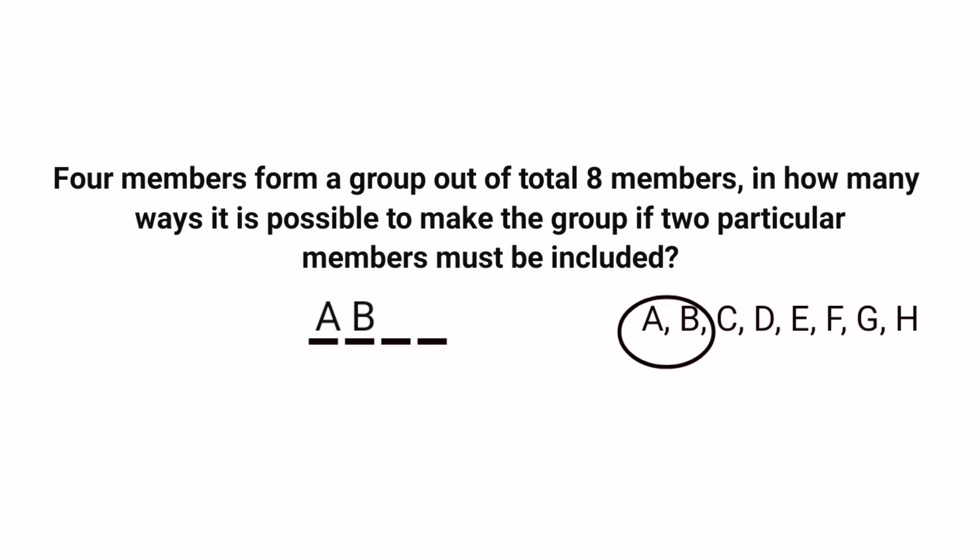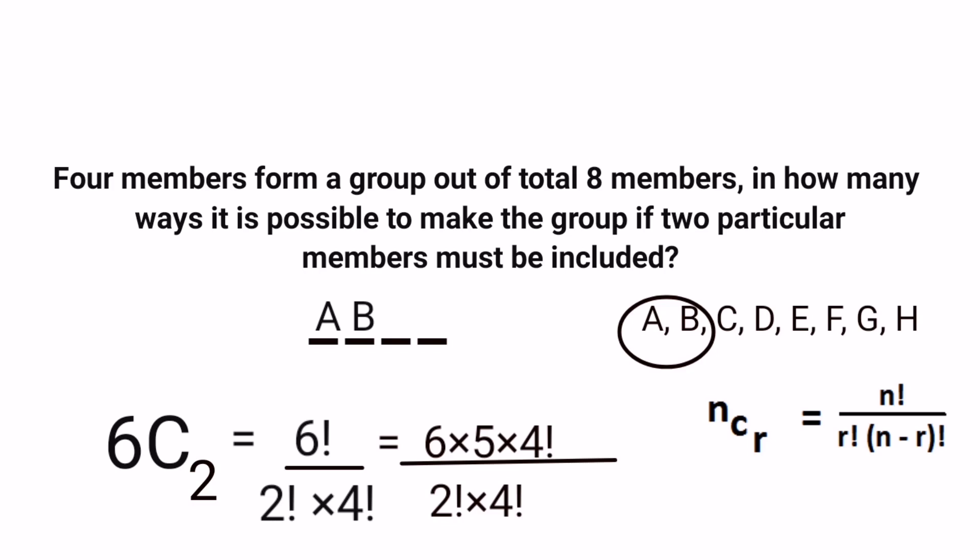So how to select? Out of eight members two is already there in two positions, so remaining six members will be there. Out of six people or six members we have to select two, so how many possible ways are there? It is 6C2. And the equation for 6C2, that is nCr is n factorial divided by r factorial × (n - r) factorial. So 6C2 will be 6 factorial divided by 2 factorial × 4 factorial. We know that 6 factorial is 6 × 5 × 4 factorial, so 4 factorial and 4 factorial will cancel. 6 × 5 is 30, 30 by 2 is 15.